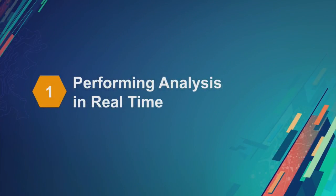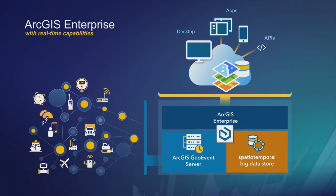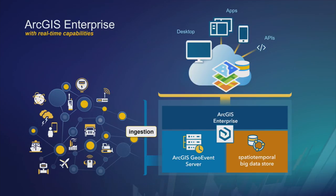When we talk about how GeoEvent Server implements real-time analytics, there are really three things GeoEvent Server does for ArcGIS Enterprise. The first is getting data into your enterprise — getting data into GeoEvent Server or into ArcGIS so you can do something with it. This happens in real-time; we have connectors that bring data in just as fast as the data is produced in real life. That's ingestion — the first of the three.